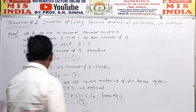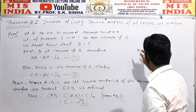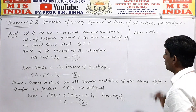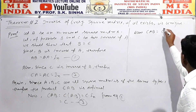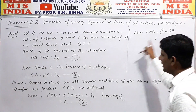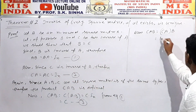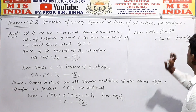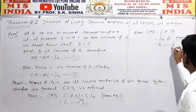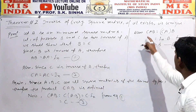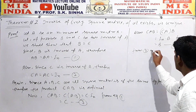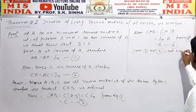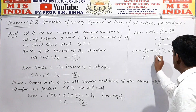Also, CAB = (CA) into B. Since CA = I_n from equation two, this equals I_n into B, which equals B. This is equation number four. Now from equations three and four, we have B = C.